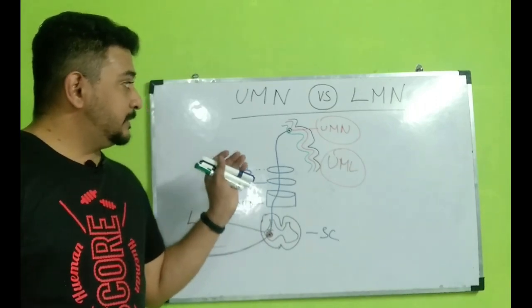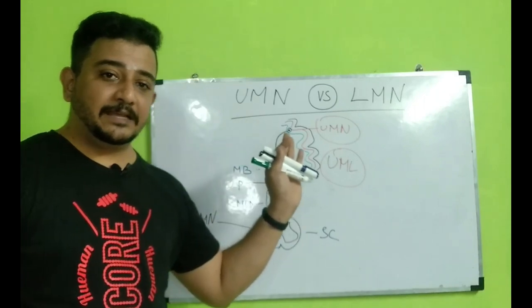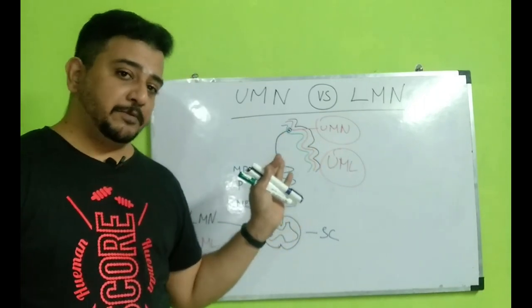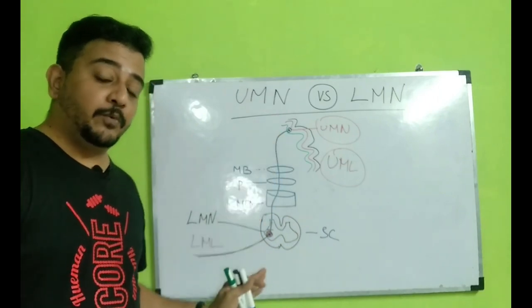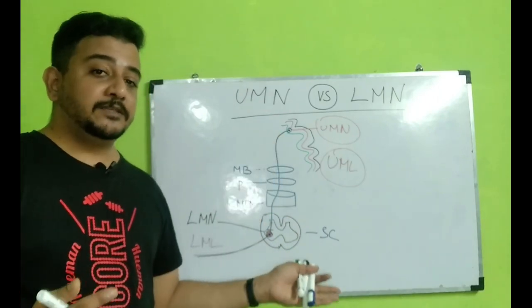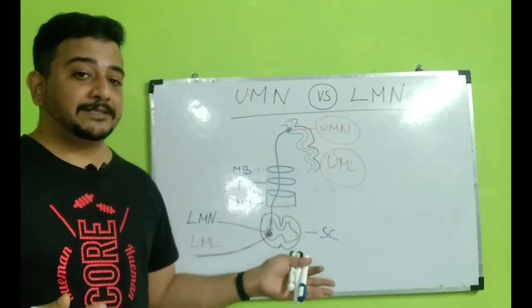So this lower motor neuron lesion versus upper motor neuron lesion can be well understood if only you know where is the neuron and until which extent these neurons send their axons to.